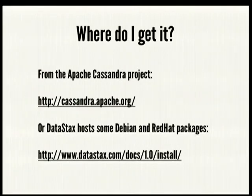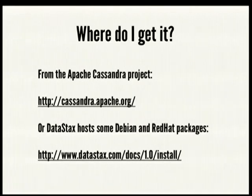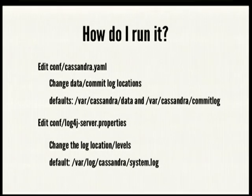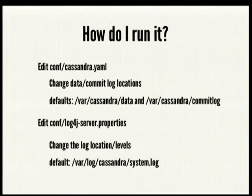So now we know a little bit about it — where do you get it? You get it from cassandra.apache.org. Or there's a company called Datastax that provides Debian and Red Hat packaging for Cassandra. Once you've downloaded, extracted, and installed it, for a development instance you'll want to change the Cassandra configuration file from the default locations.